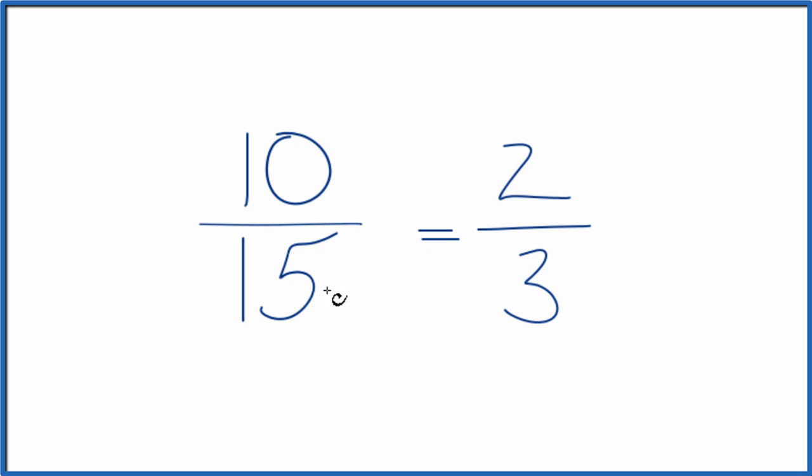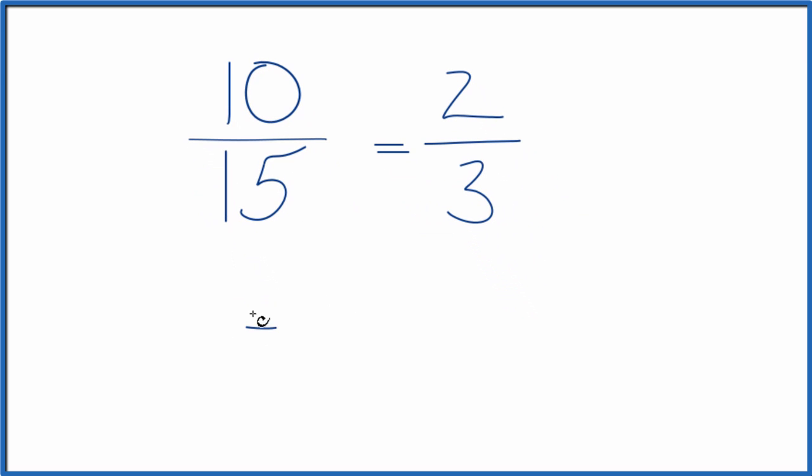Instead of dividing, we could multiply. Why don't we just double the numerator and denominator? Because 10 times 2, that's 20, 15 times 2 is 30. So 20 over 30, that's another equivalent fraction for 10 fifteenths.